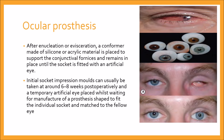Regarding ocular prostheses: after enucleation or evisceration, a conformer made of silicone or acrylic material is placed to support the conjunctival fornices and remains in place until the socket has been fitted with an artificial eye. In the first picture there is a conformer in place, and these are the artificial eyes. Initial socket impression molds can usually be taken at around six to eight weeks post-operatively, and a temporary artificial eye is placed while waiting for manufacture of a prosthesis shaped to fit the individual socket and matched to the fellow eye.